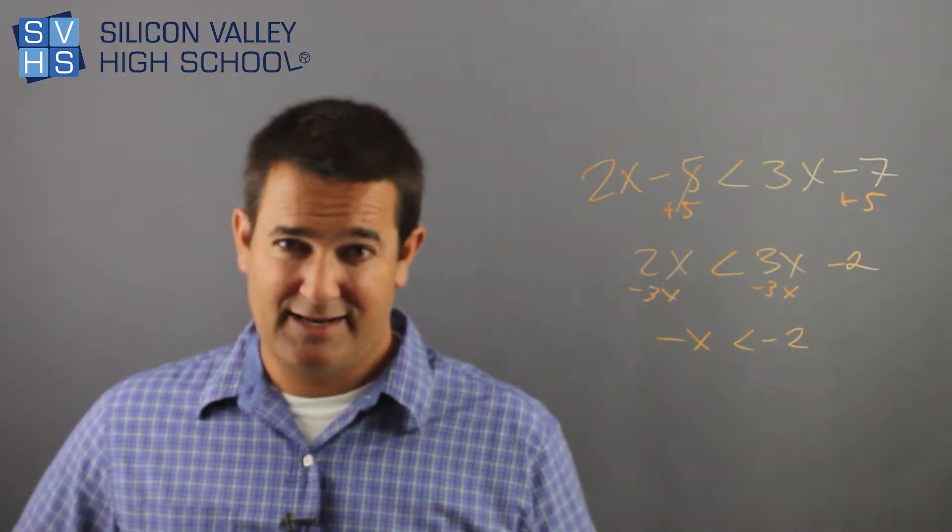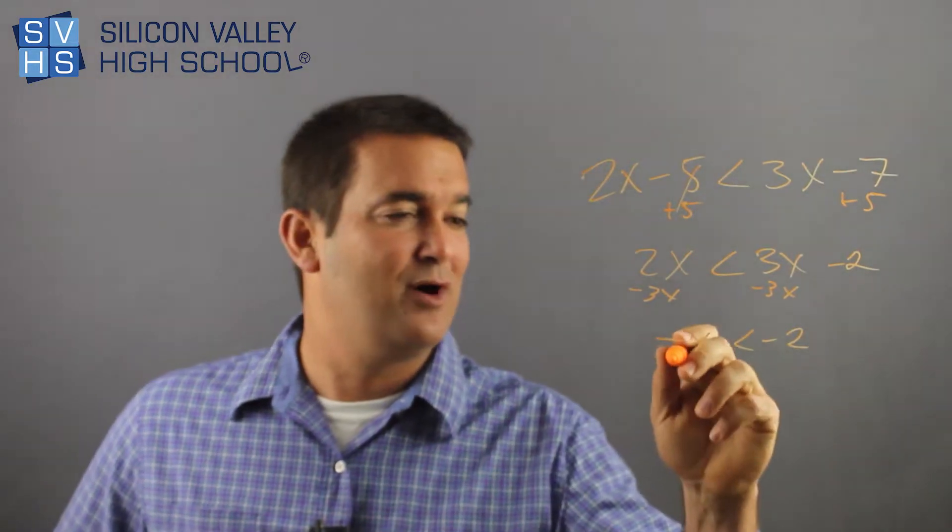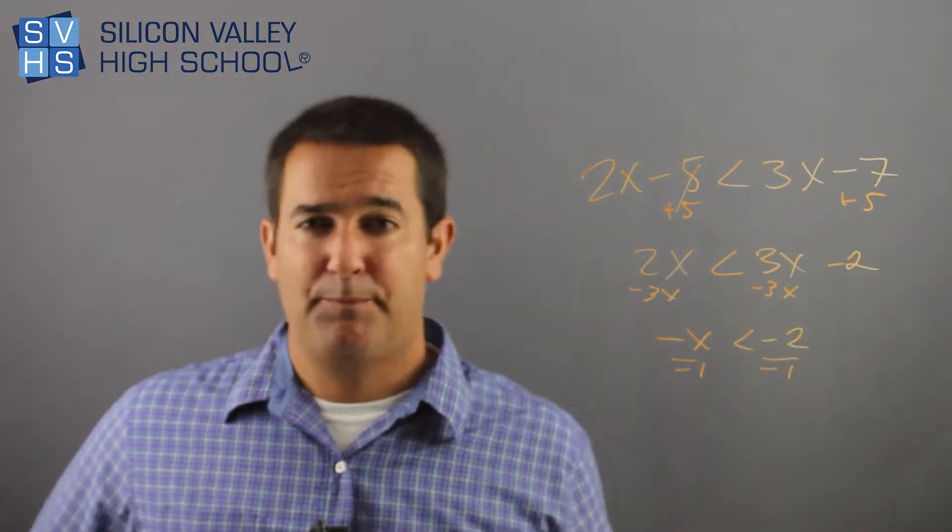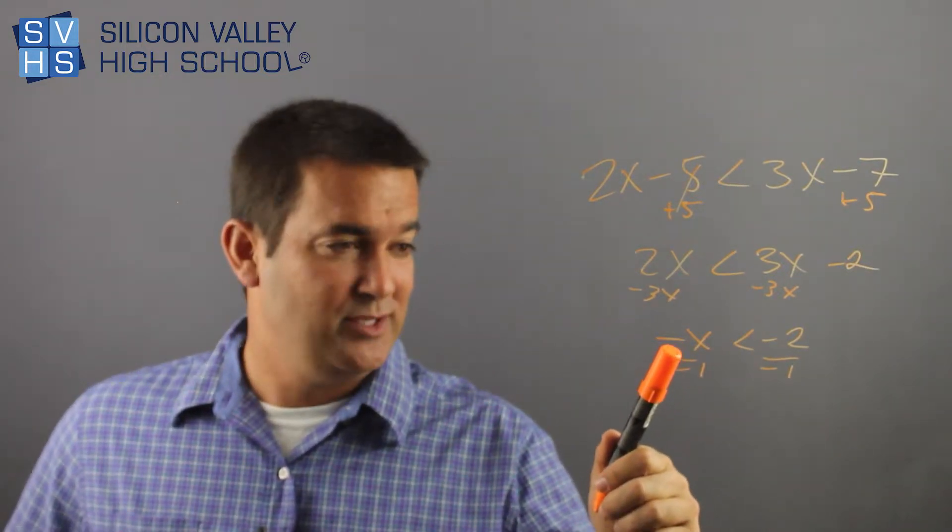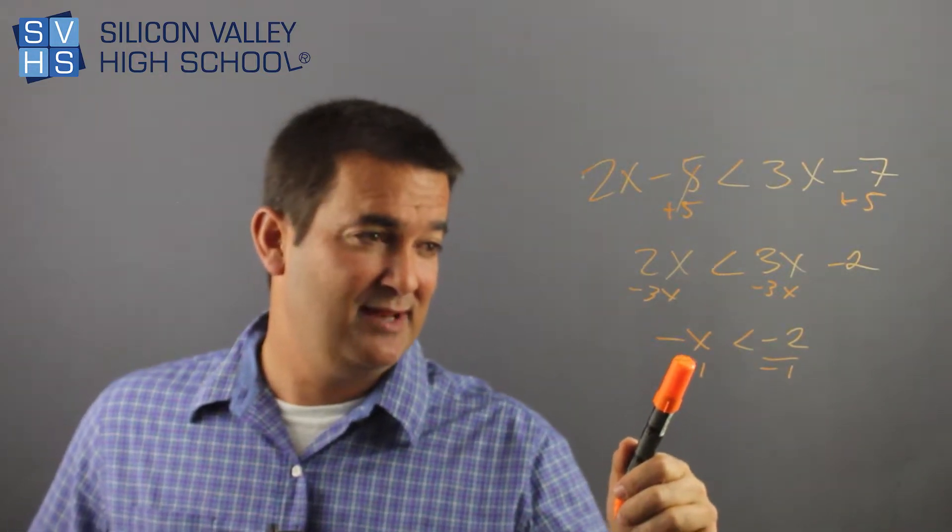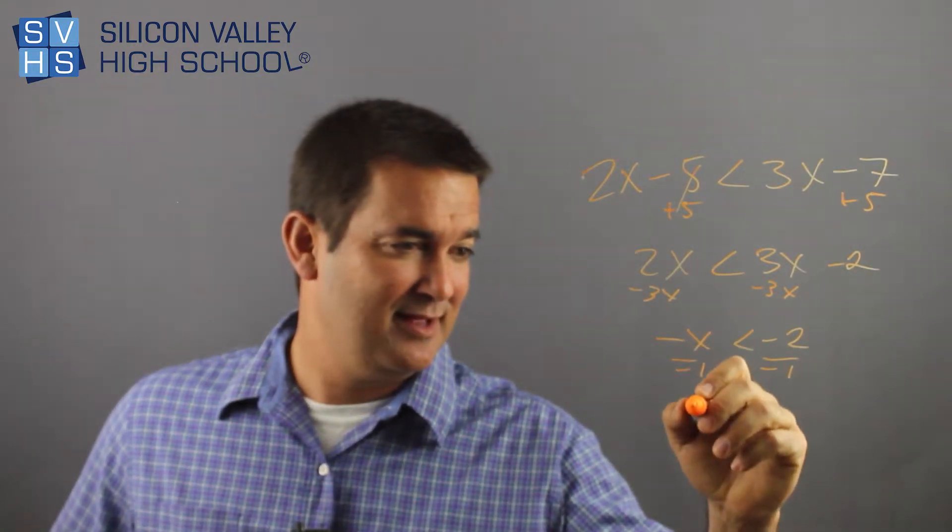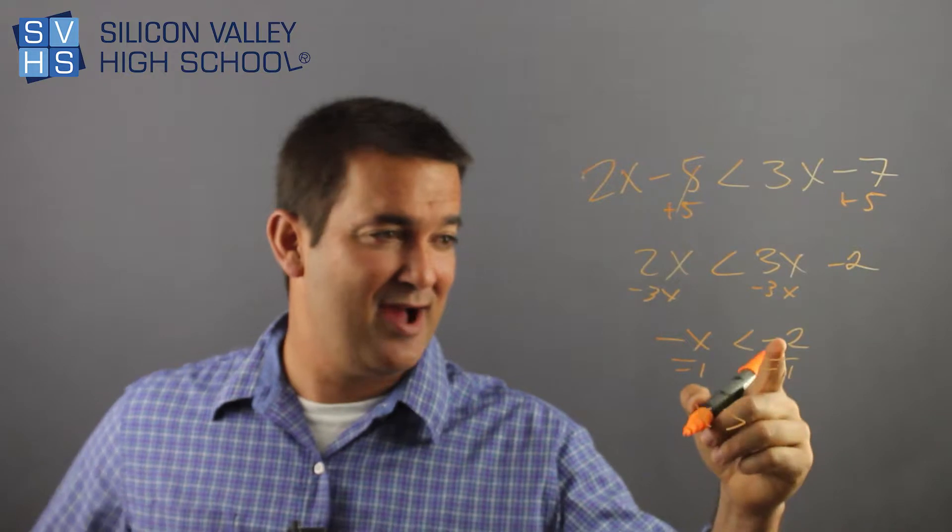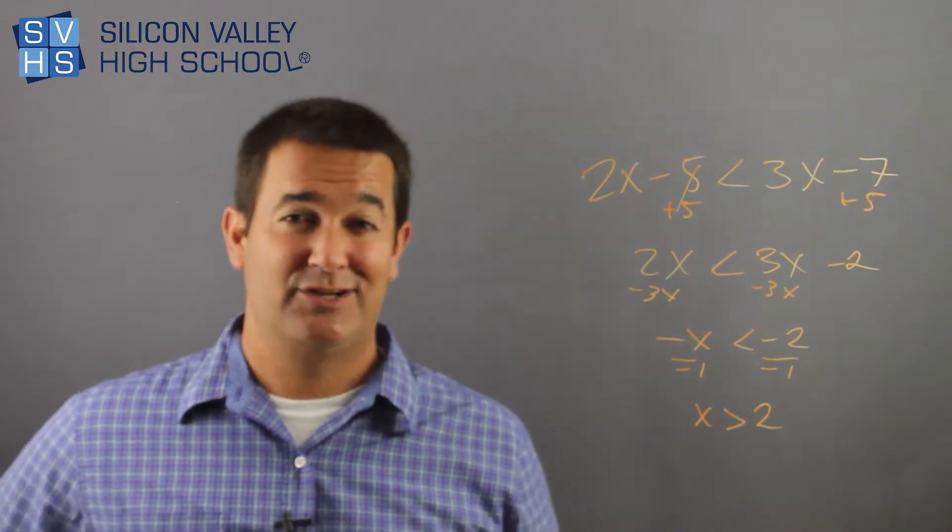I don't want to solve for negative x, I want to solve for x. So I actually have to divide both sides by a negative 1. And now I'm going to pause for effect, because here's the drama. When you divide an inequality by a negative number, this sign flips. So the answer would be x greater than now, and negative 2 divided by negative 1 is just 2. There's your answer.